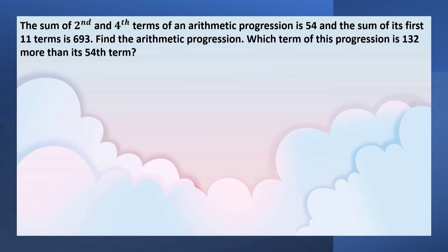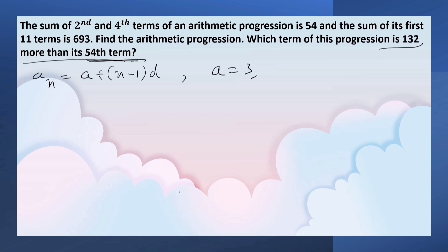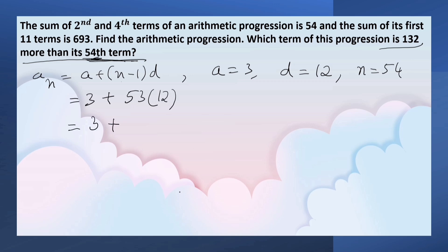Now we have to find which term of the progression is 132 more than its 54th term. First, we find the 54th term using the formula A_N equals A plus (N minus 1) into D. Here A is 3, D is 12, and N is 54. So A54 equals 3 plus 53 into 12, that is 3 plus 636, which equals 639.